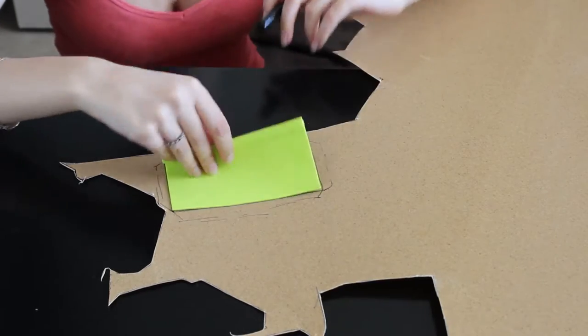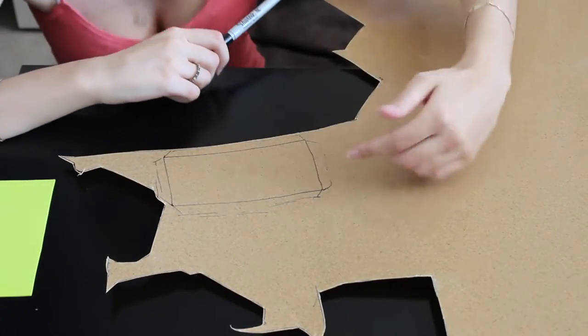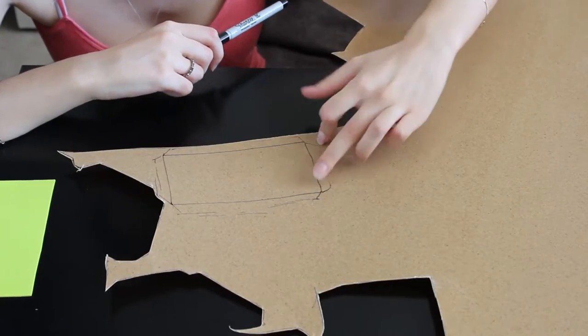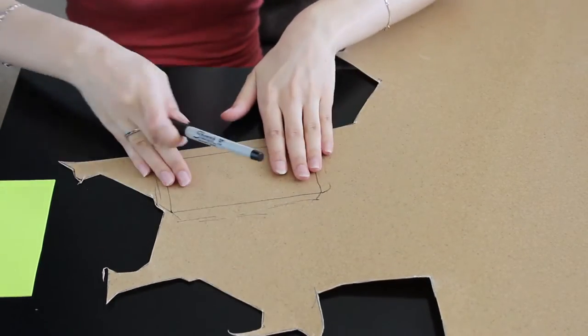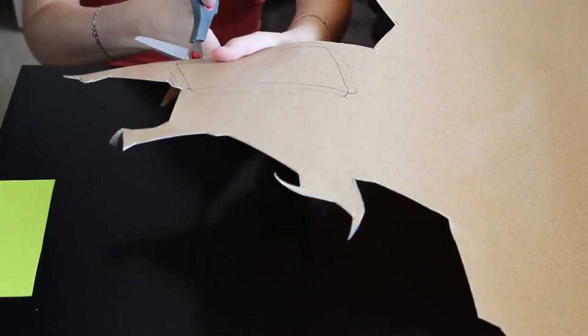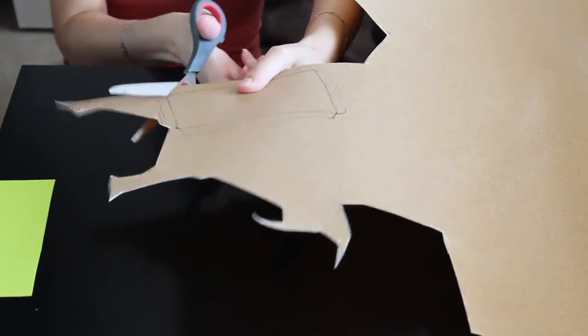Four sides. And because this is the fold over method we want a little bit extra along each one so that way we can fold it over. So once you're happy with it and you have it drawn on, it's time to cut it out.